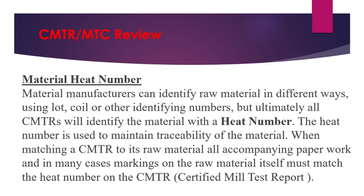The material heat number is another most important element in the mill certificate. The certificate must mention the heat number. Material manufacturers may identify raw material using a lot number, heat number, coil, or other identifying method, but ultimately all CMTRs identify the material with the heat number. The heat number is used to maintain traceability of the material. When matching a CMTR to its raw material, all accompanying paperwork and in many cases the marking on the raw material itself must match the heat number on the CMTR.